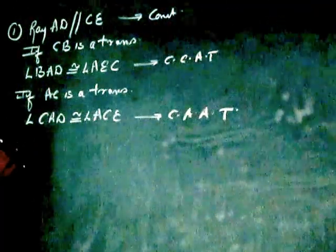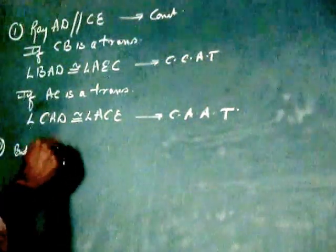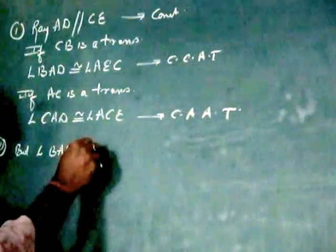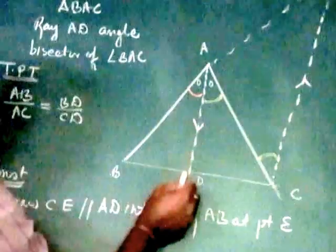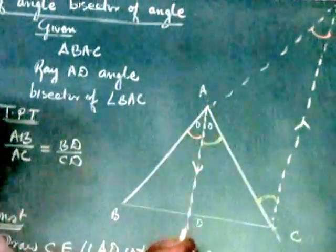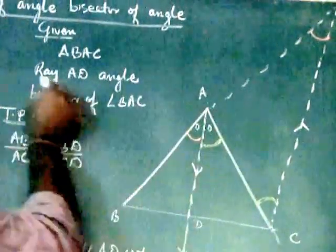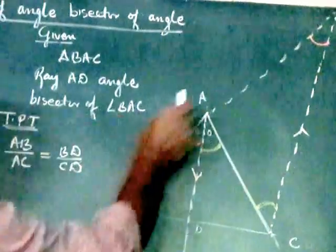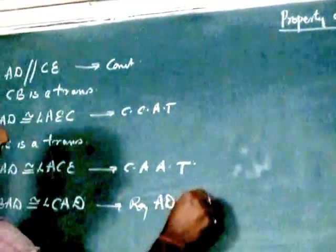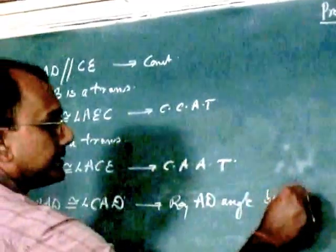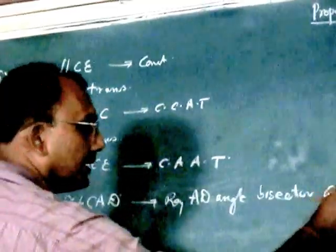Point number 2: But angle BAD is congruent to angle CAD. Angle BAD is congruent to angle CAD because AD is a bisector of angle BAC. Reason: Ray AD angle bisector given.